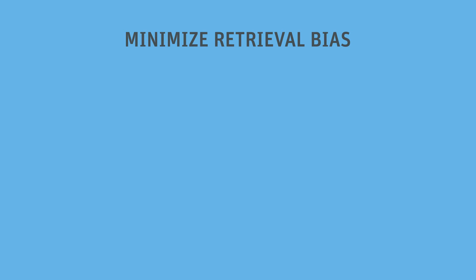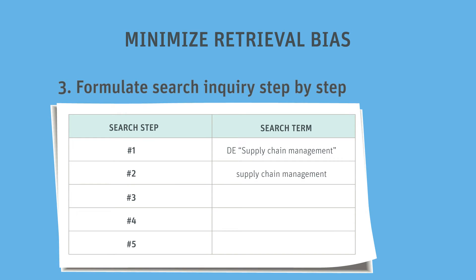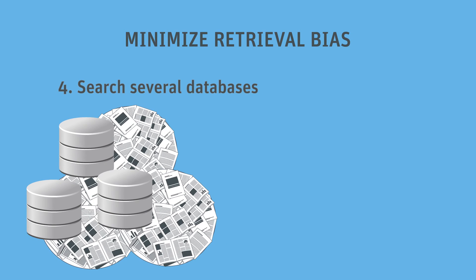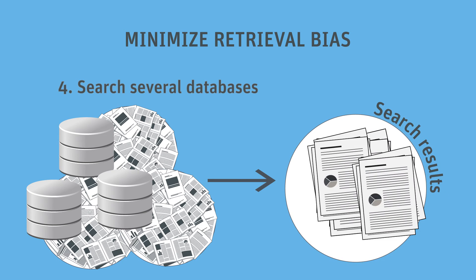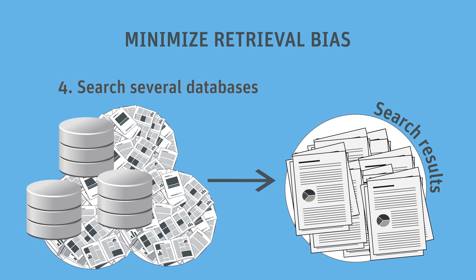When formulating her own search inquiry, she should proceed step by step so that she quickly notices her own mistakes. Ms. Müller also advises Julia to search several databases. Bibliographical databases overlap thematically, so searching through several increases the chance of finding relevant entries that have been poorly indexed.